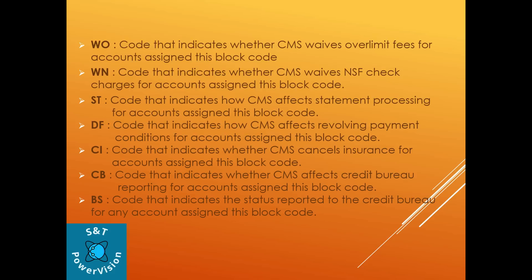DIAP is the code that indicates how CMS affects revolving payment conditions for the account assigned this block code. CI indicates whether CMS cancels insurance, and CB indicates whether CMS affects credit bureau reporting for the account. BS indicates the status reported to the credit bureau. The credit bureau in India is the NCB (National Credit Bureau agency), which checks your financial history to determine whether you are eligible for a card — other countries have different names but similar functionality.